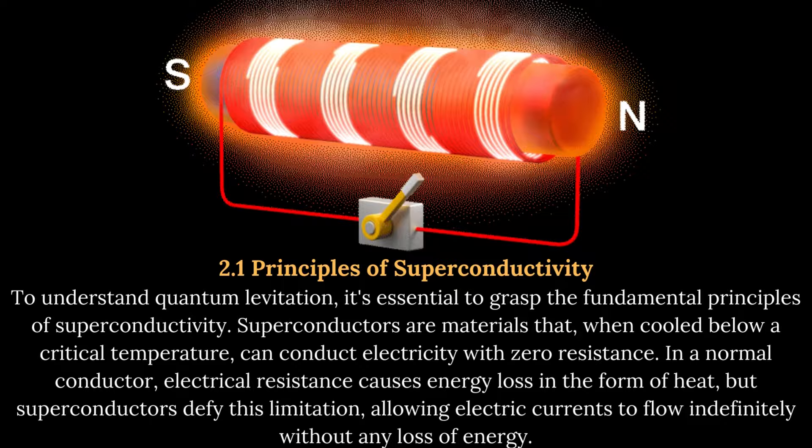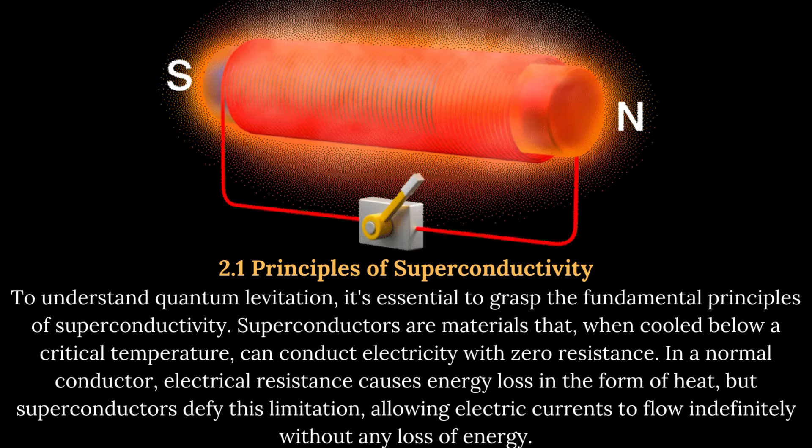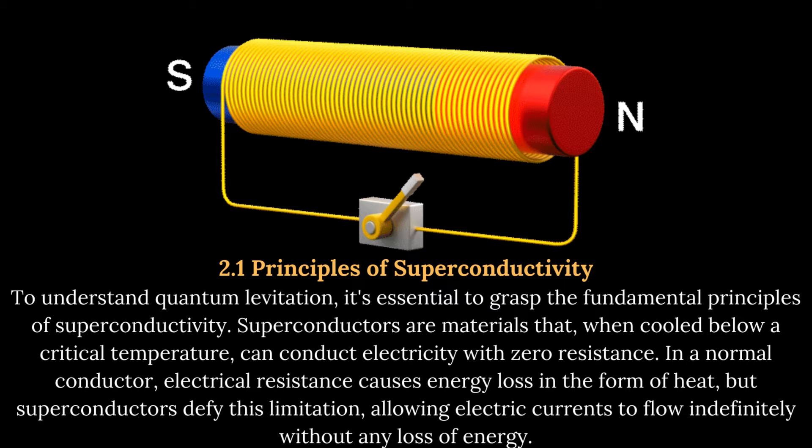The science behind quantum levitation. Principles of Superconductivity: To understand quantum levitation, it's essential to grasp the fundamental principles of superconductivity. Superconductors are materials that, when cooled below a critical temperature, can conduct electricity with zero resistance. In a normal conductor, electrical resistance causes energy loss in the form of heat, but superconductors defy this limitation, allowing electric currents to flow indefinitely without any loss of energy.